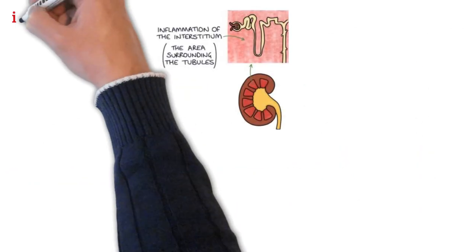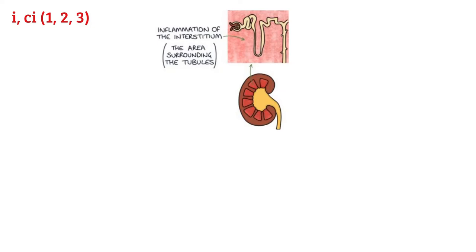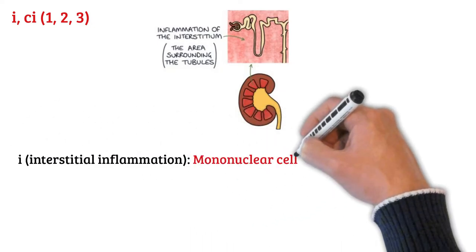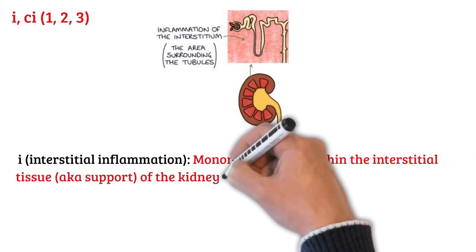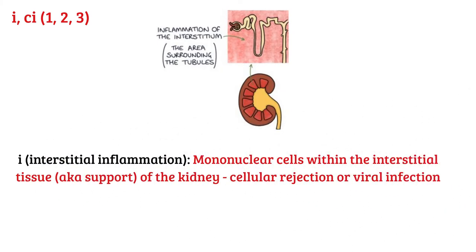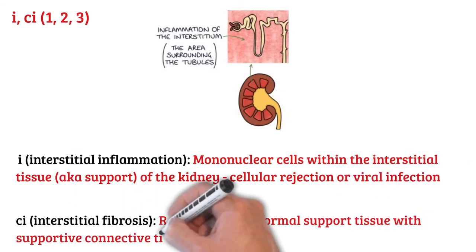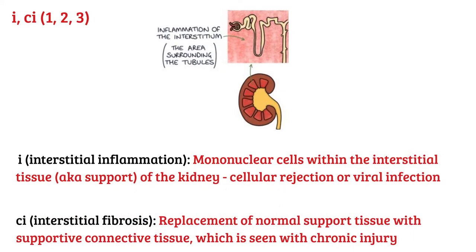Moving on to the interstitial tissue, we have two codes: I and CI. I stands for interstitial inflammation, and represents the presence of inflammatory cells within the interstitium, which can be seen with cellular rejection or a viral infection, similar to T. CI stands for interstitial fibrosis, which represents the replacement of normal support tissue with connective tissue, seen with chronic injury.